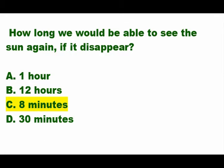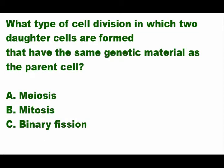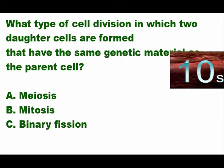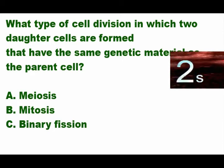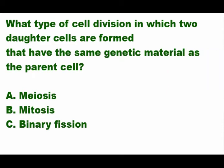Next question: what type of cell division produces two daughter cells that have the same genetic material as the parent cell? Is it A) meiosis, B) mitosis, or C) binary fission? The answer is letter B — mitosis. If two daughter cells are formed with the same genetic material, that is mitosis.